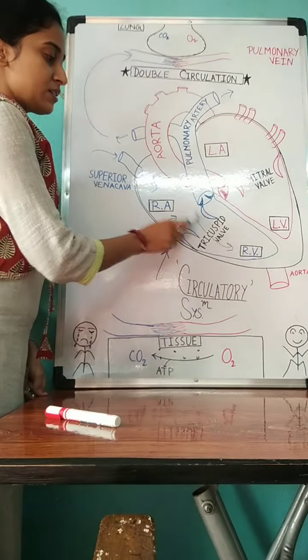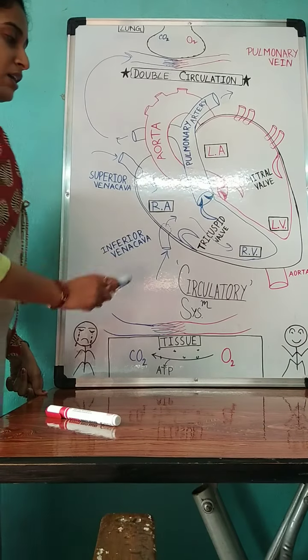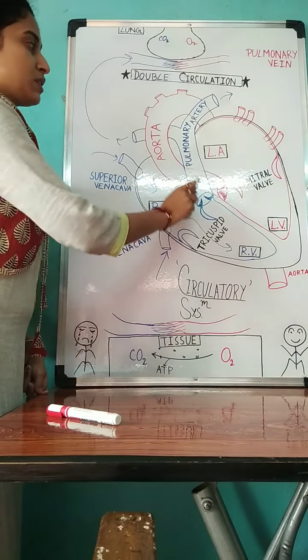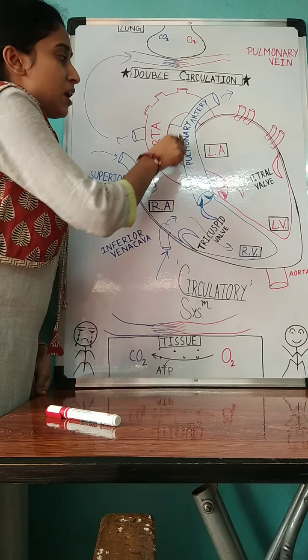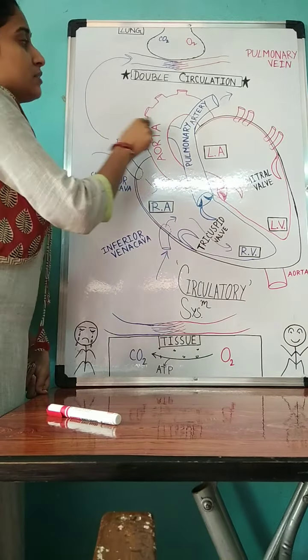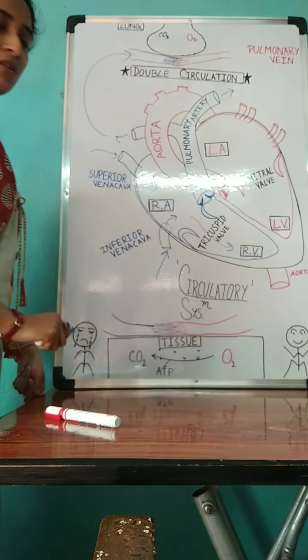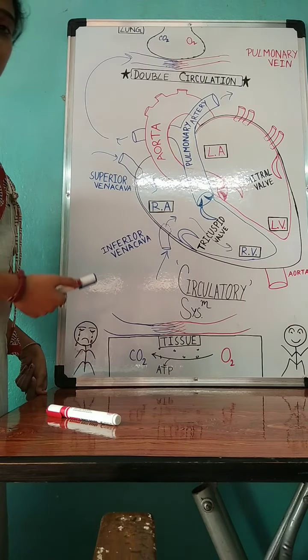it closes the tricuspid valve and pumps the blood to the pulmonary artery. Now you know that this is the deoxygenated blood so it needs to get purified.